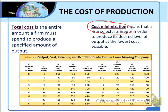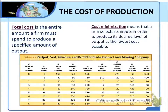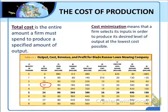A firm can only adjust variable inputs to minimize cost. In the long run, all inputs are variable, and Blade Runner could sell all its mowers and change the quantity of any other input. But in the short run, Blade Runner can vary only the number of workers it hires to mow lawns. So minimizing cost in the short run comes down to mowing lawns using as few workers as possible. The costs in this table are the minimum costs for mowing each number of lawns. For example, Blade Runner cannot mow 17 lawns with fewer than 3 workers, so the lowest possible variable cost of mowing 17 lawns is 3 times $60, or $180.